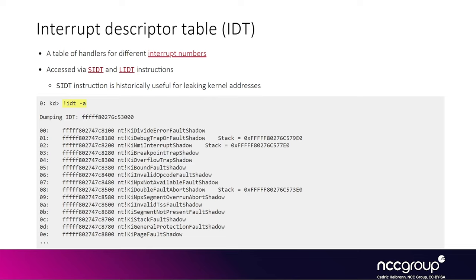The first table we're interested in is the Interrupt Descriptor Table, also known as the IDT. It shows the different handlers for interrupts. Confusingly, even though the name says interrupt descriptor table and interrupts are asynchronous, exception-type traps that are triggered synchronously are also tracked by this table. However, this table does not track the actual syscall exceptions. There are unprivileged instructions like SIDT that you can call from userland, and historically you could use these to get the address of that table from userland. So if you have an arbitrary read primitive, you could provide the address of that table and start reading other kernel data.